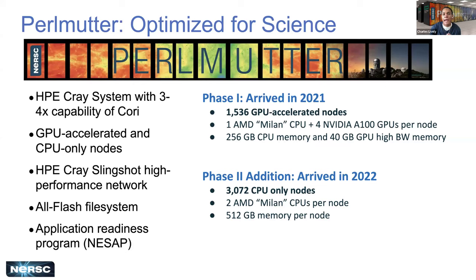Perlmutter has both CPU nodes as well as GPU nodes. The first portion of nodes that arrived are combined GPU and CPU nodes, and our second phase of nodes were CPU-only nodes. Could we maybe get a sense of the type of applications users are planning to use — meaning, do you expect to be working mainly on CPU-only, or GPU and CPU, or MPI, OpenMP? Could we get a few people sharing their type of job submissions?